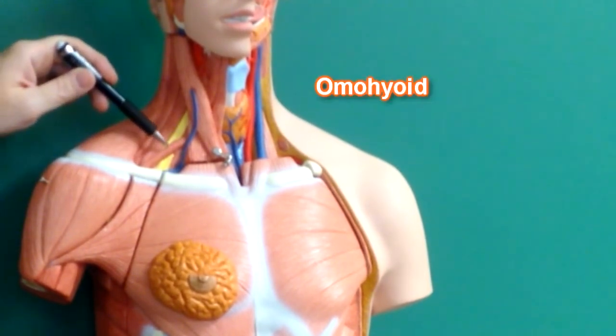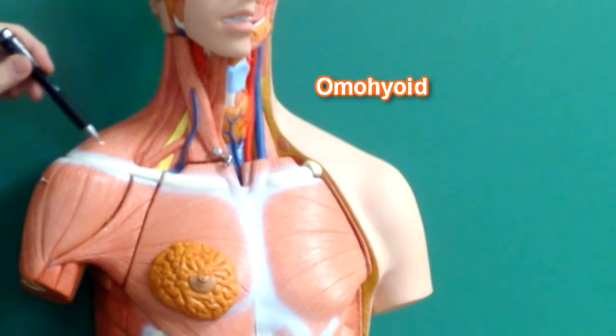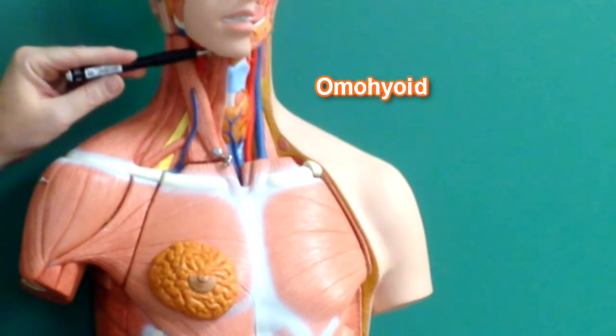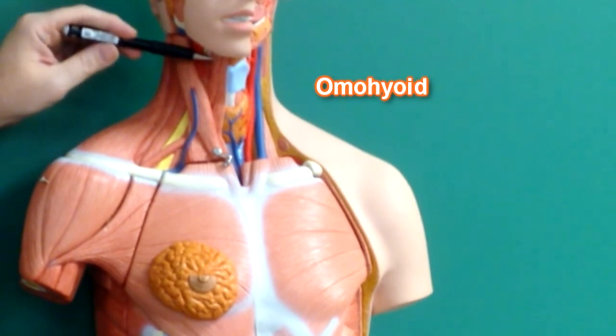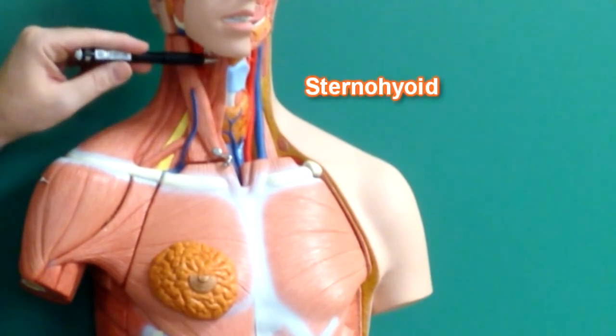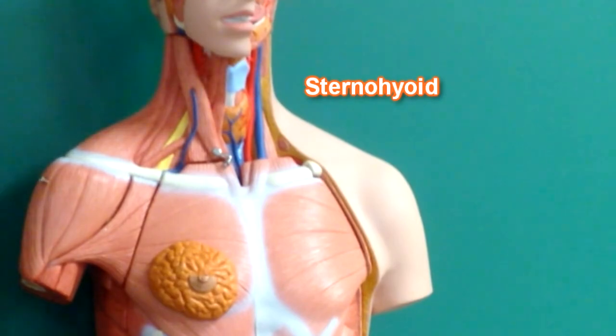This right here would be the fibers of the omohyoid coming from the scapula going up to the hyoid bone under here. Here are also fibers of omohyoid. This right here would be fibers of sternohyoid.